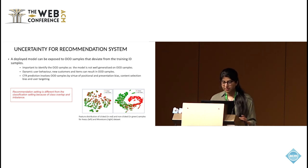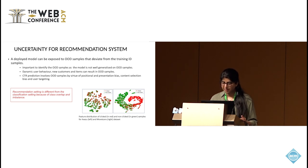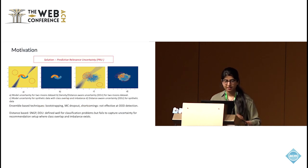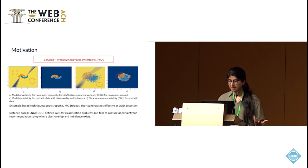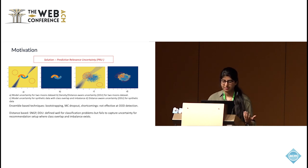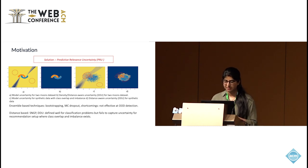We observe that the recommendation system setting is different from the classification setting because of the class overlap and imbalance observed in the recommendation system, as shown in the figure. To understand better, we plot the uncertainty for the classical two-moon dataset. Figure A shows the model uncertainty using deep ensembles, and figure B shows the distance-aware uncertainty, which is the recent uncertainty proposed for the classification setting.